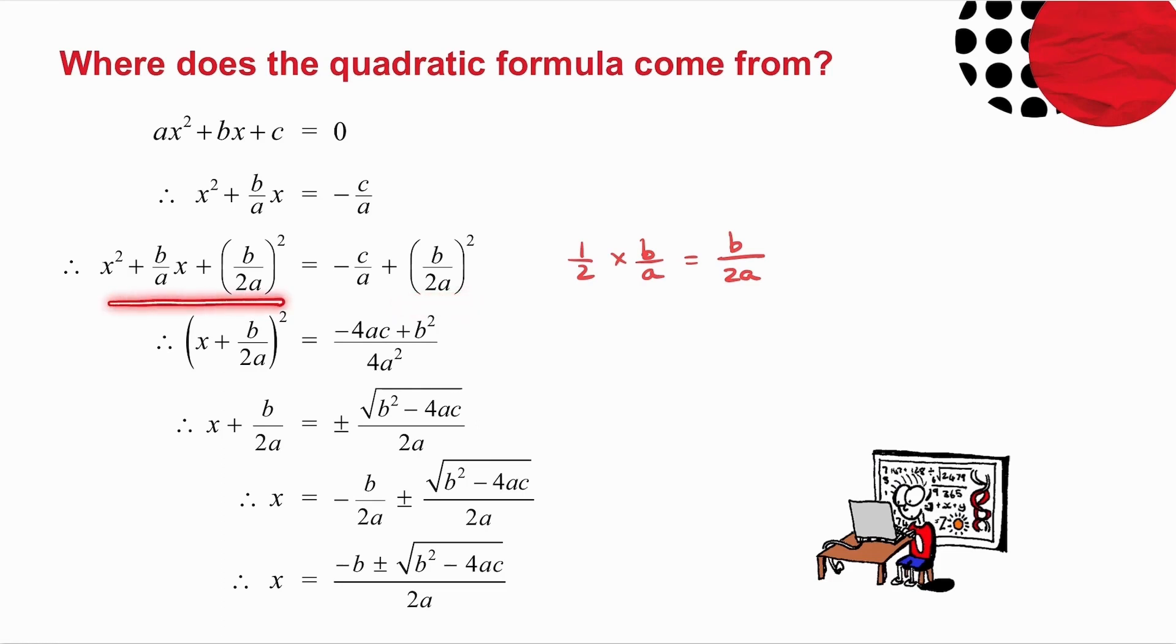These three terms then formed a perfect square. I collected those terms and wrote them as one fraction. Take the square root on both sides, don't forget the plus minus, and then you take this term across to the other side and you write that as one fraction.